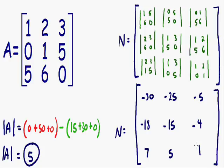Moving on to the next step: we need to alternate positive and negative signs in our matrix. Starting in the top left position with a positive sign, then we alternate to negative, positive, negative, positive, negative, positive, negative, and positive.